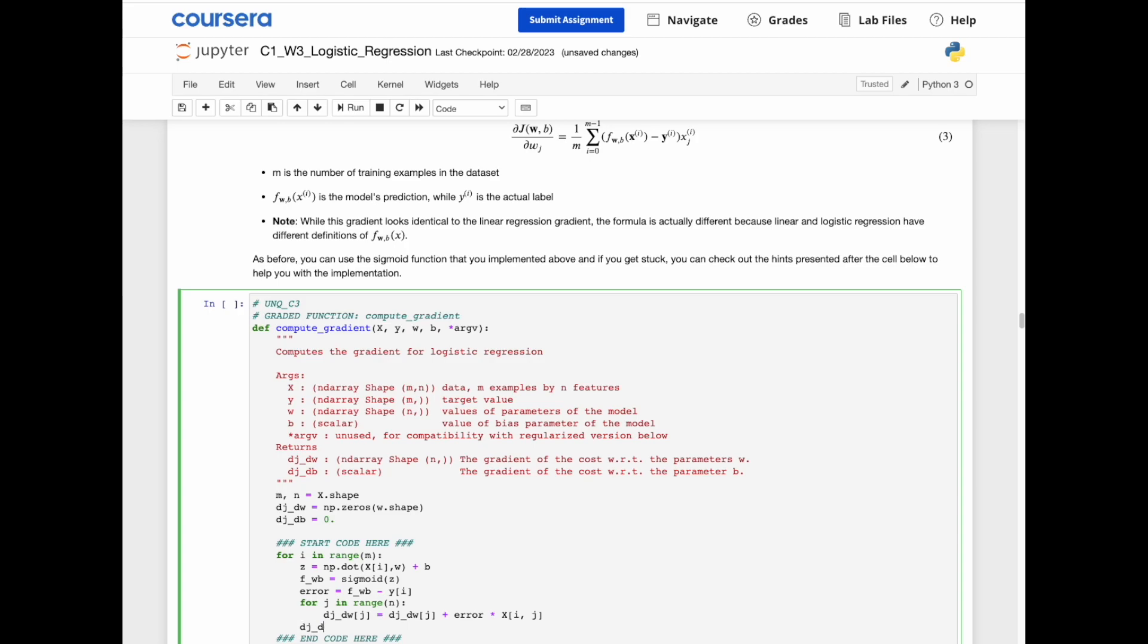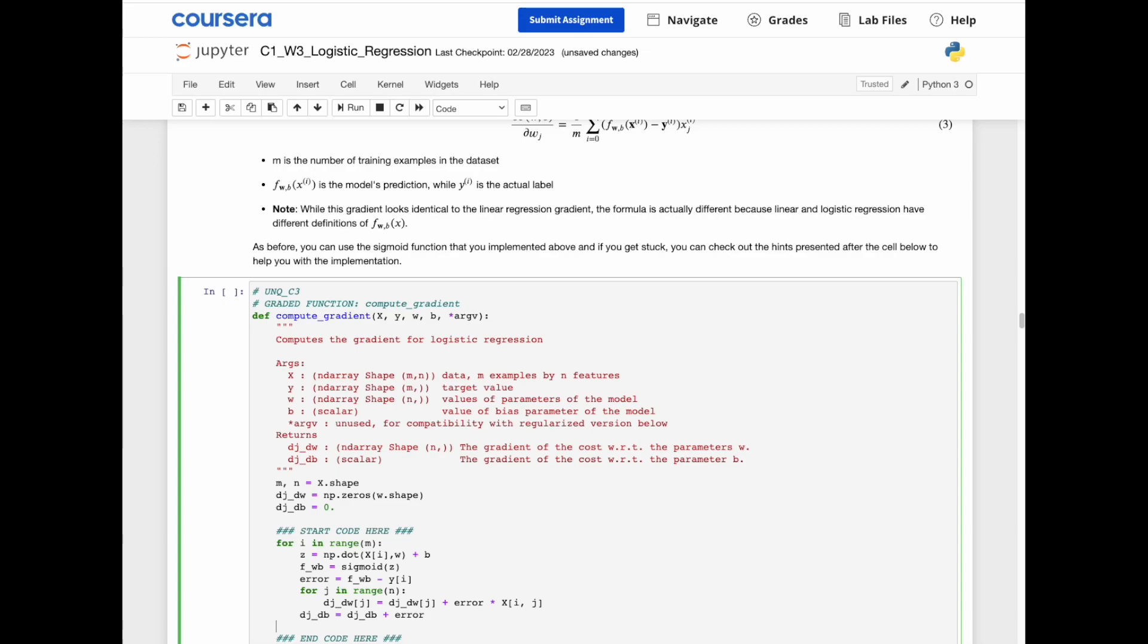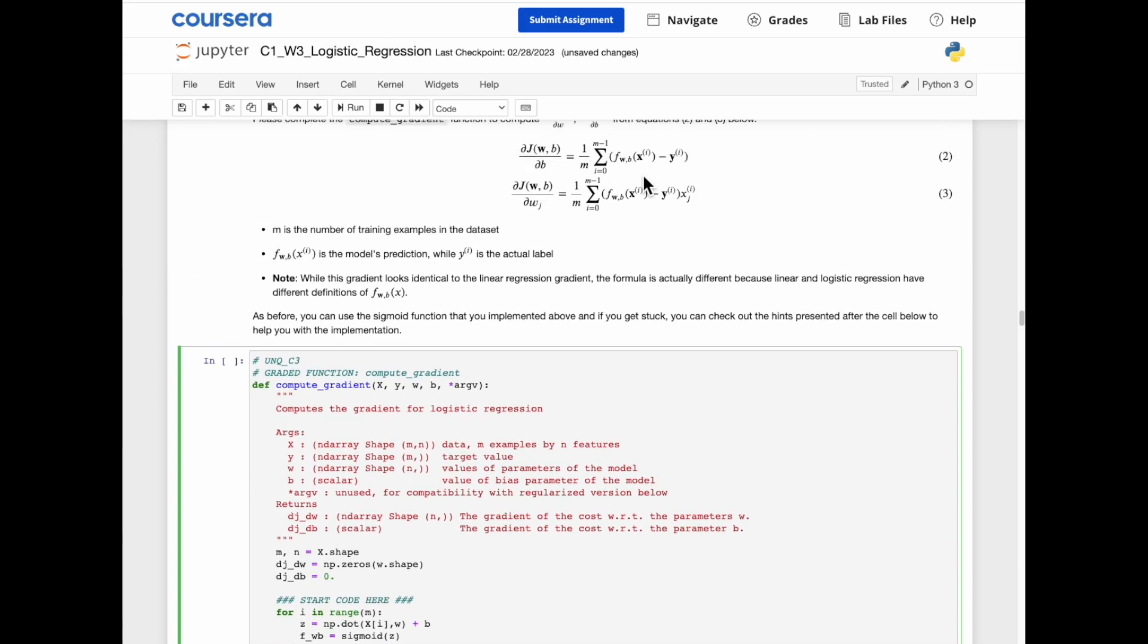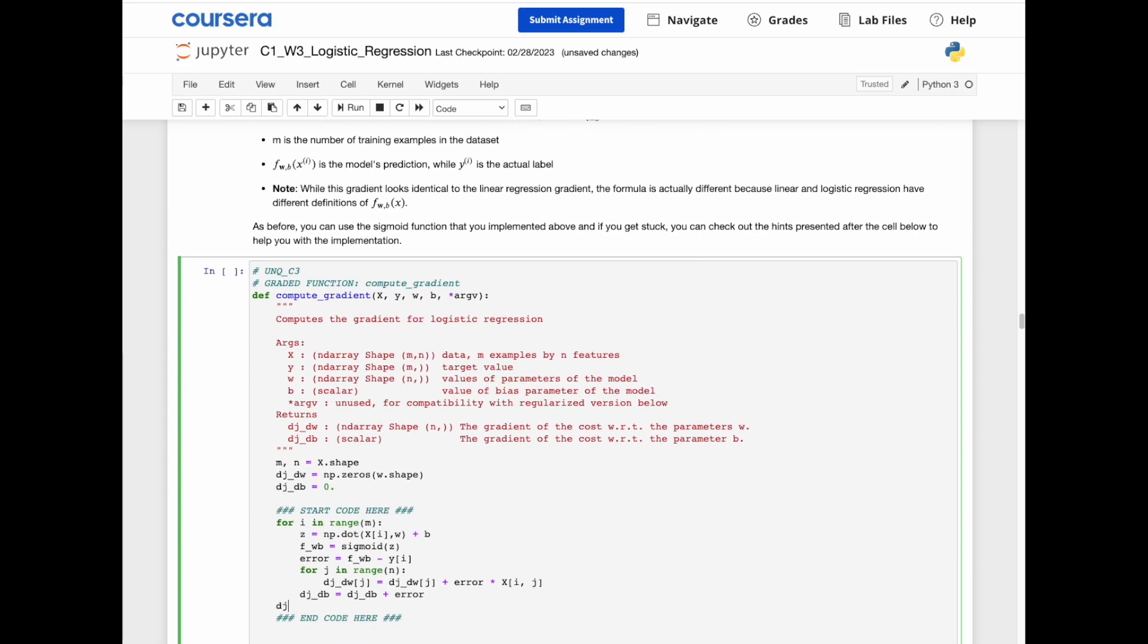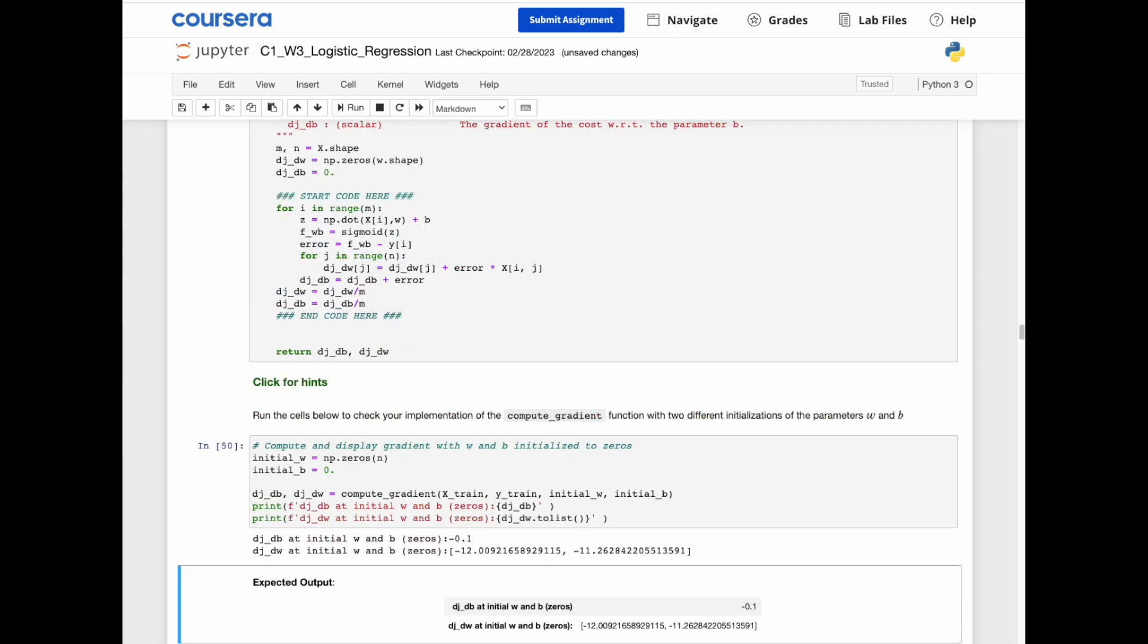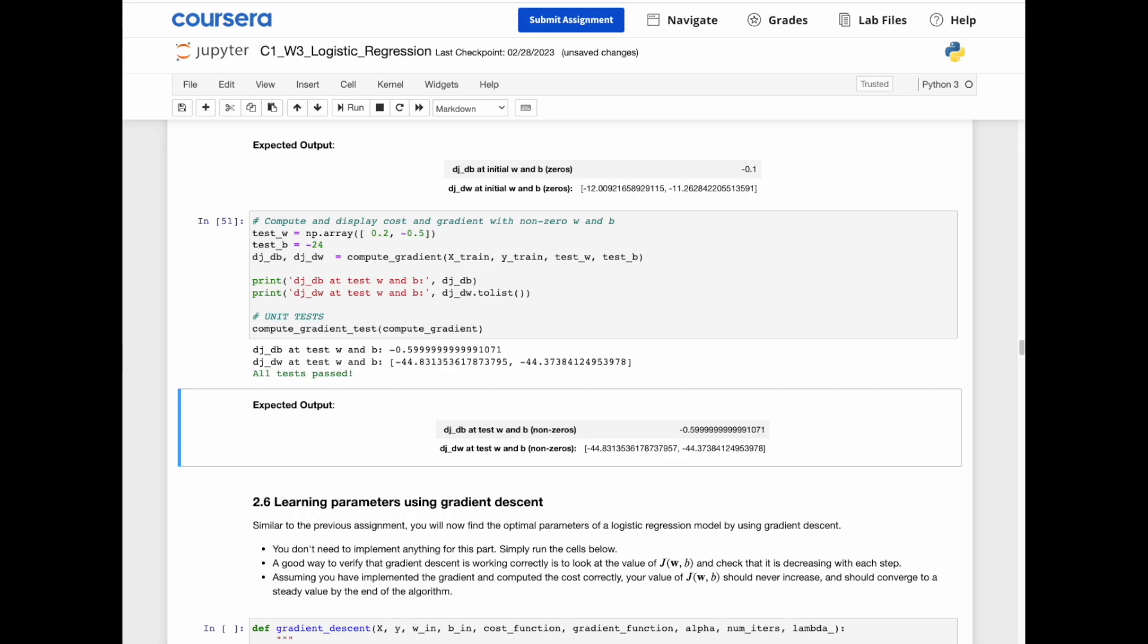And dj_db will be equal to dj_db plus this error term. And once we're done iterating, we are going to divide by our number of training examples, m. And all tests passed.